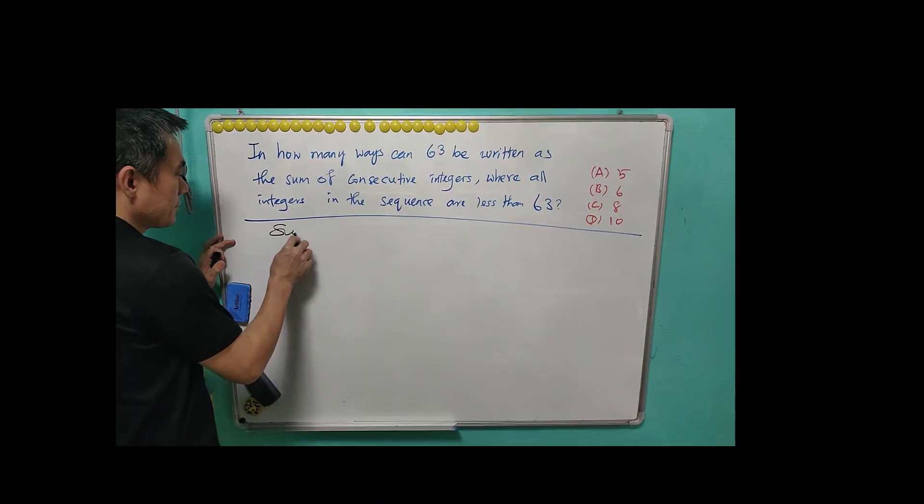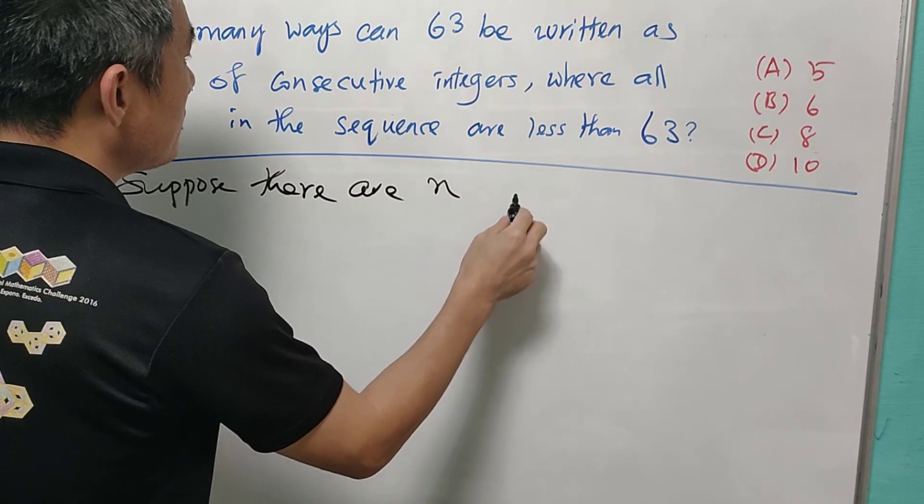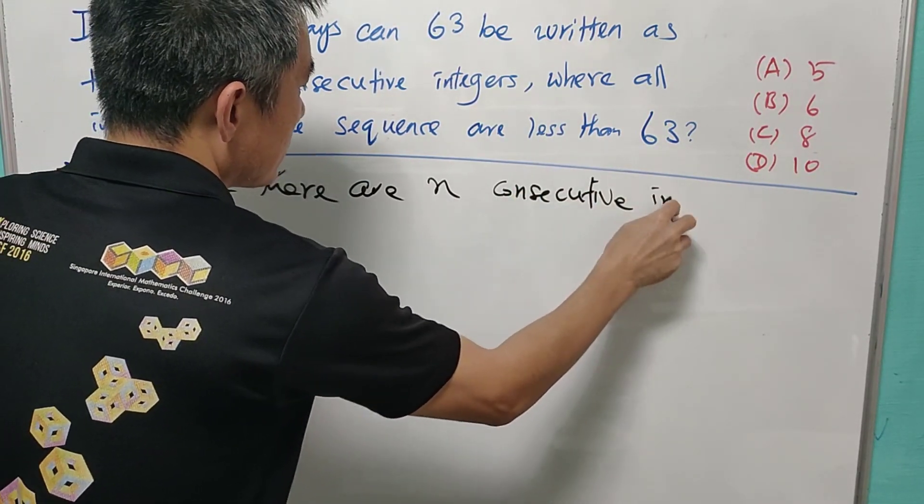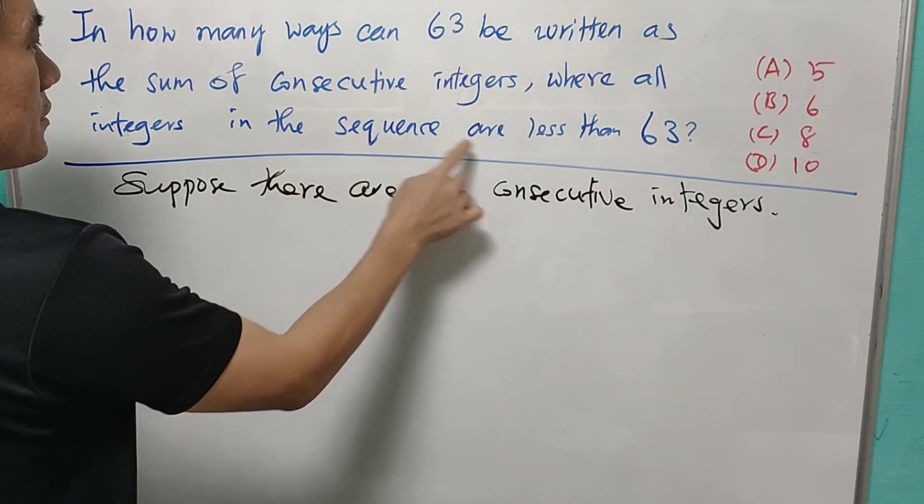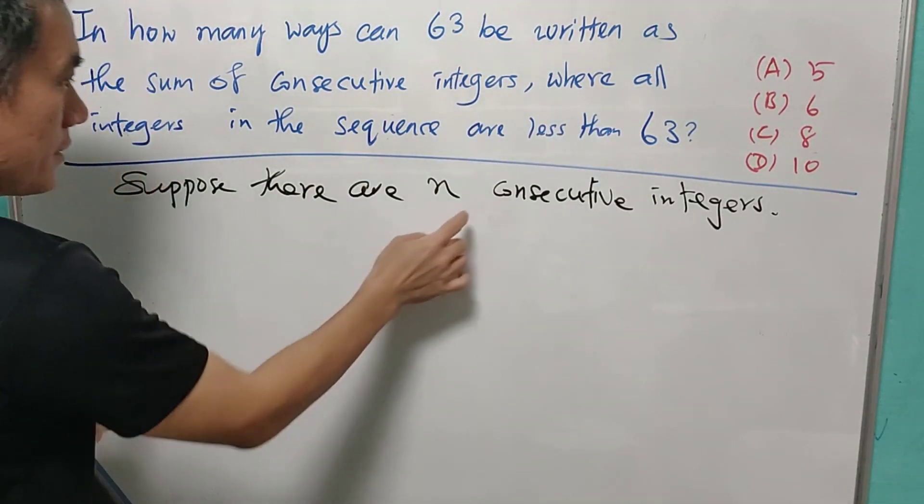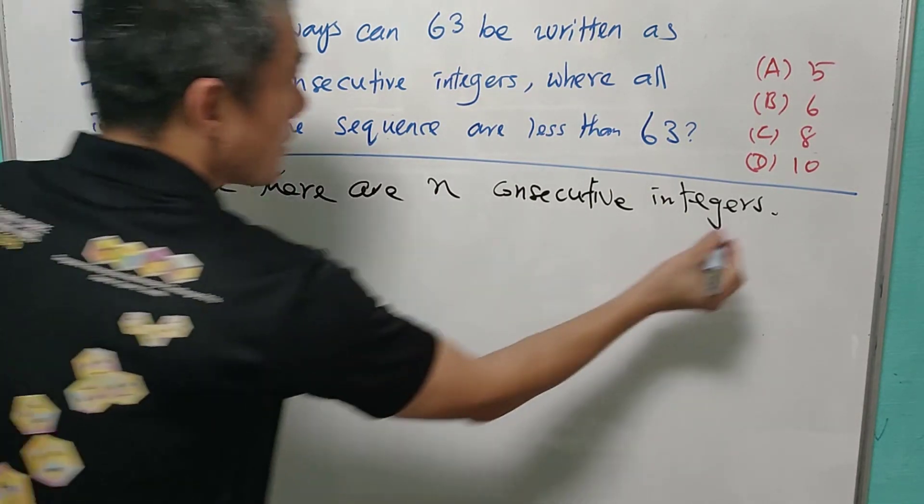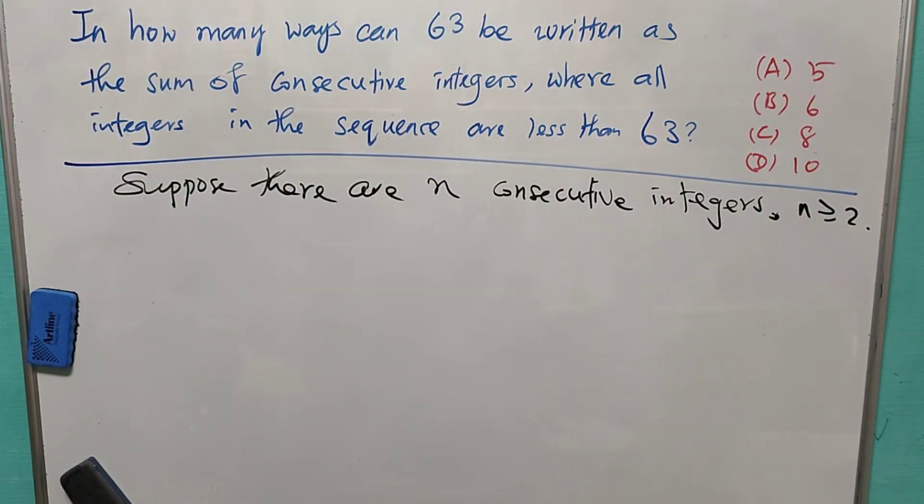Now we suppose that there are n consecutive integers. Now in this case, all the integers in the sequence are less than 63, so it means that n must be at least 2. So we'll separate into two cases.